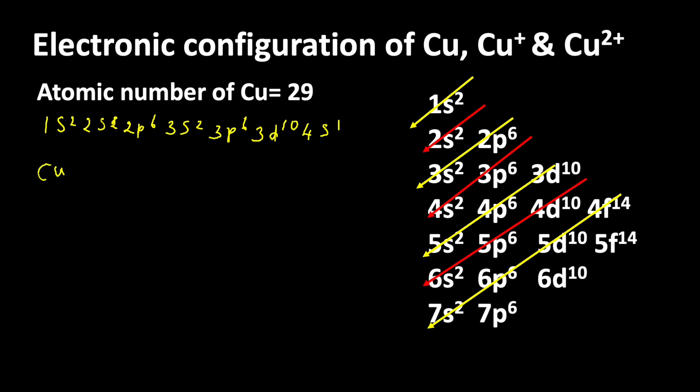Now we will write the electronic configuration of Cu+ ion. Cu+ ion is formed when copper loses one electron, which means the available electrons in Cu+ ion is 28.